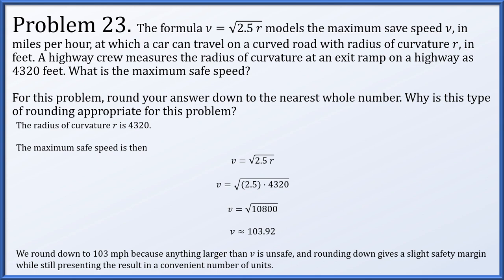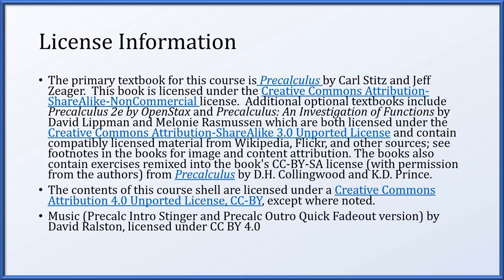Rounding down is appropriate because anything larger than 103.92 is unsafe. In practice, in the US, speeds are given in multiples of 5, so this would likely be rounded down to 100 mph, and highway speed limits would typically be lower than that anyway.